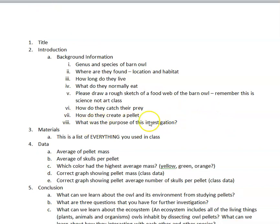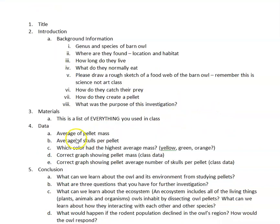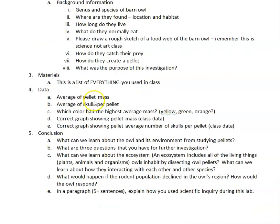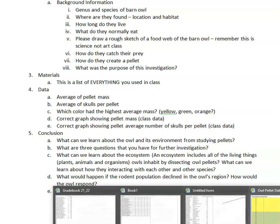So, what was the purpose of this investigation? Materials is your next section — just list everything you used. Then the data section: the data is found on my Northside. I want you to find the average pellet mass for all the groups that submitted results, and the average number of skulls per pellet.